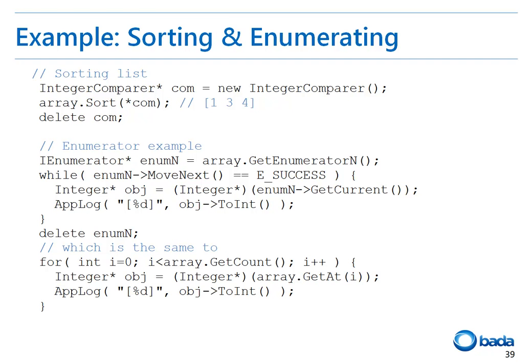To sort a list, you need to use the Comparer interface. In the case of an integer list, you can create the pre-implemented IntegerCompare class and sort a list using this class. The iEnumerator interface accesses the objects in the collection in sequence. This example accesses and prints the items in the ArrayList on the screen sequentially.